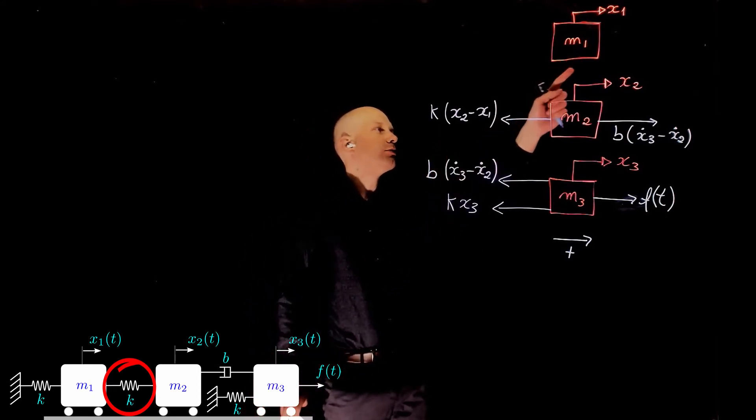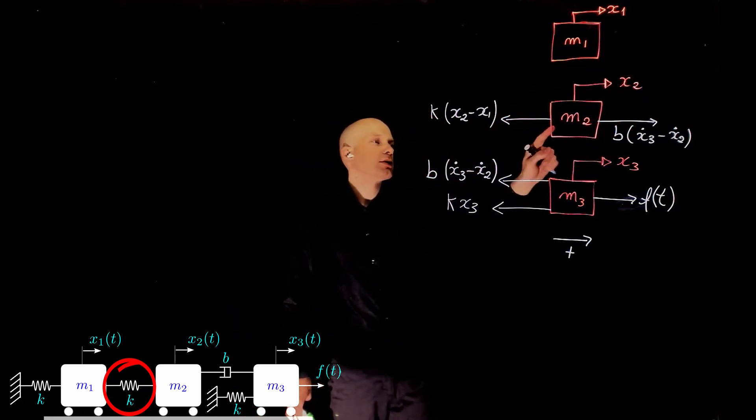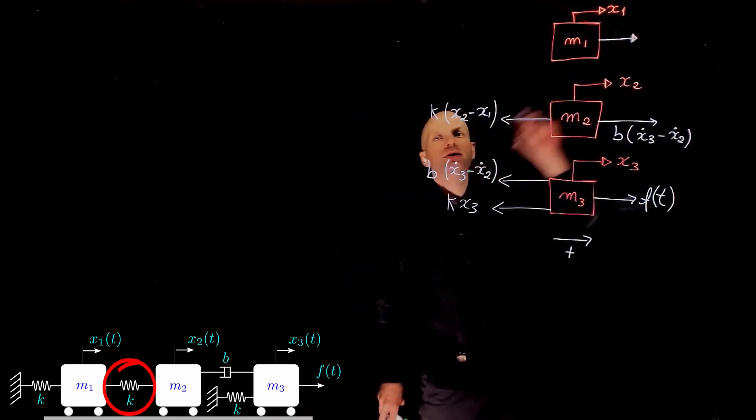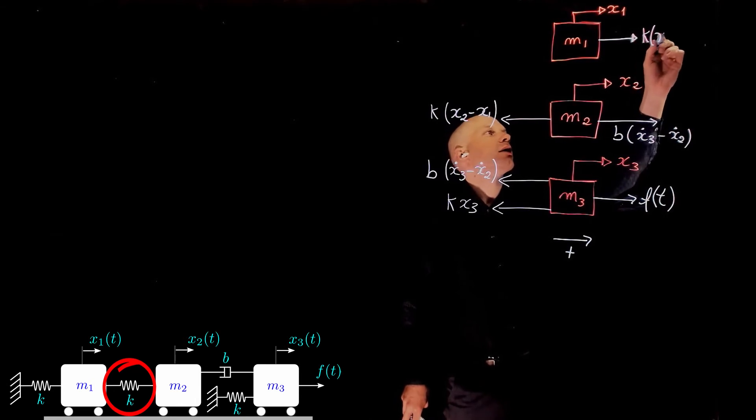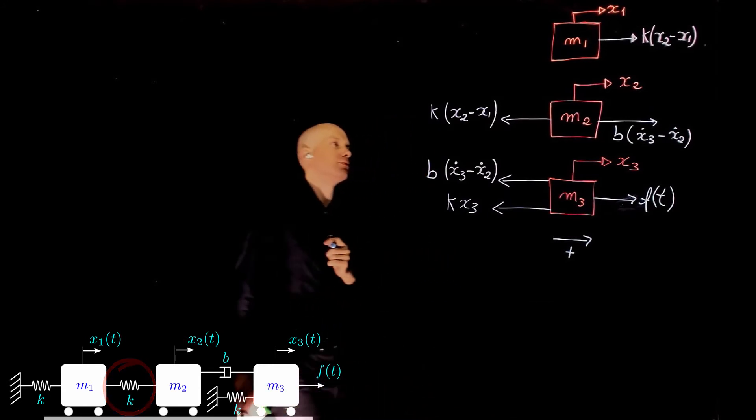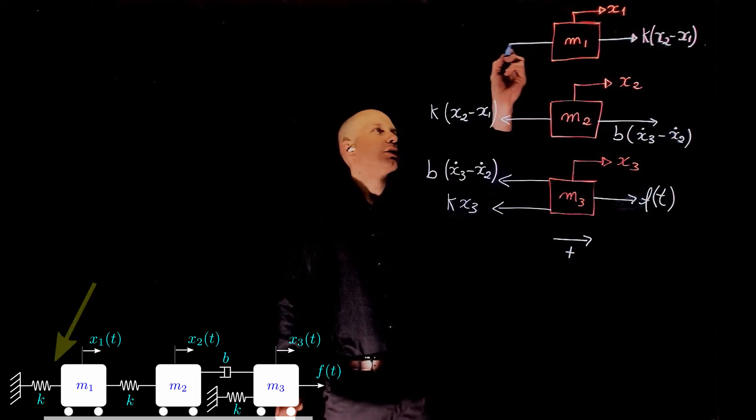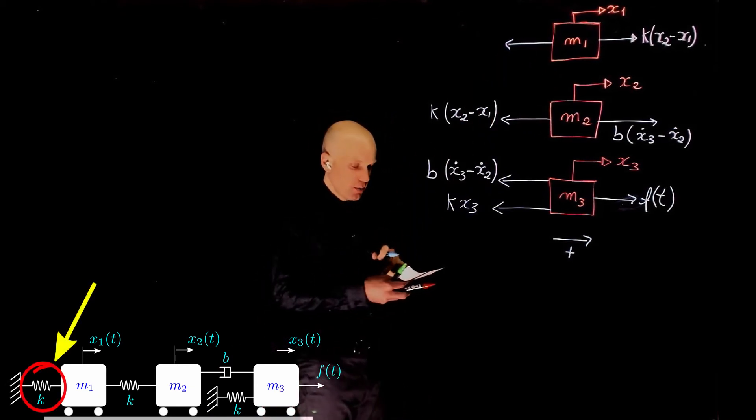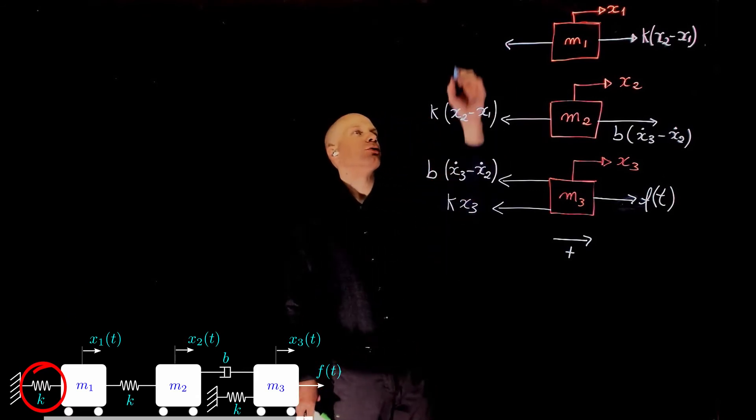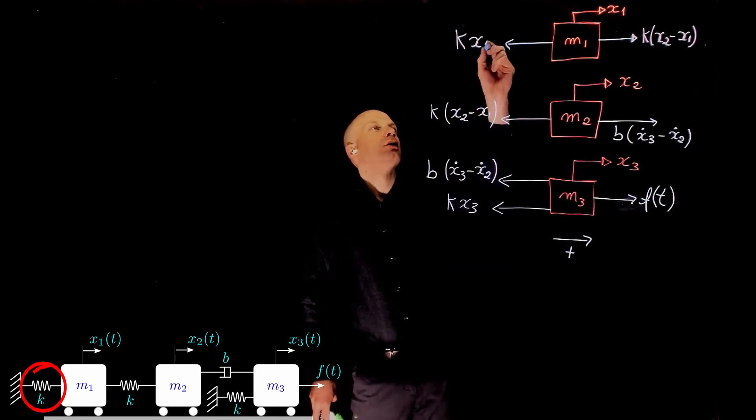If you now go to mass m1, it is clear that the force that pulls on m1 to the right is the same as the one that acts on m2 in this direction. So this force here will be the same as that one, k(x2 minus x1). And finally, there is another force acting on m1 because m1 is fixed to a fixed reference through a spring. So the force due to that spring is simply k times x1.